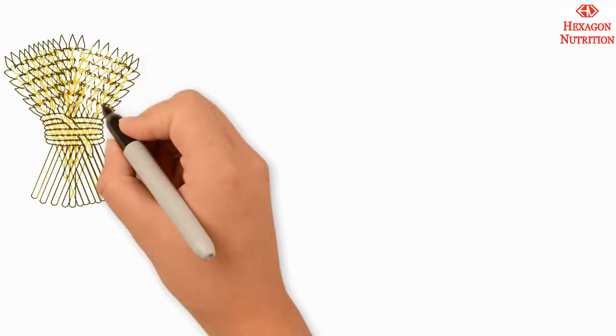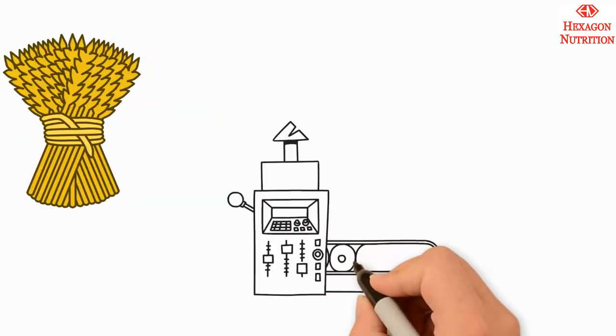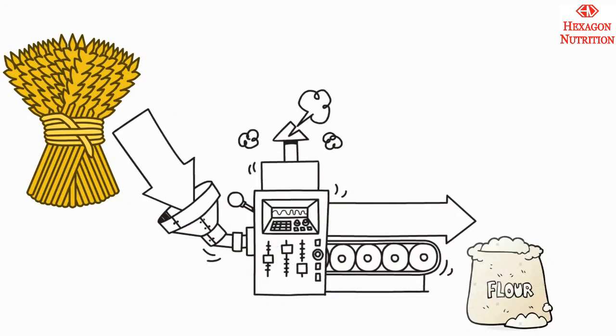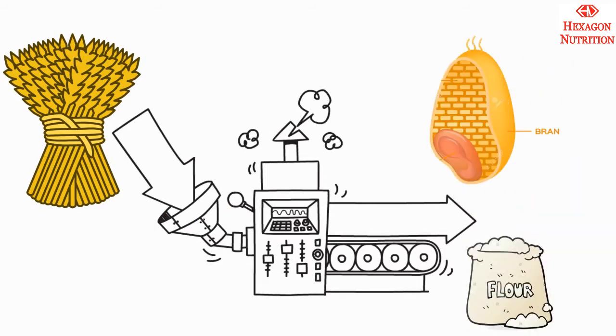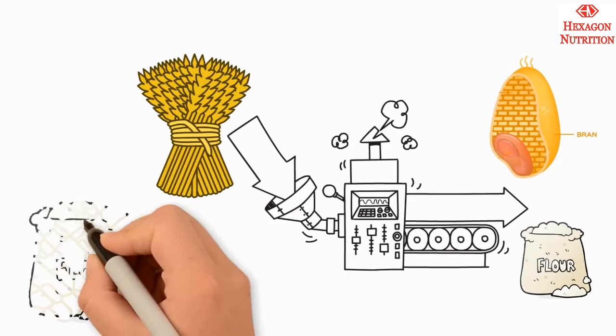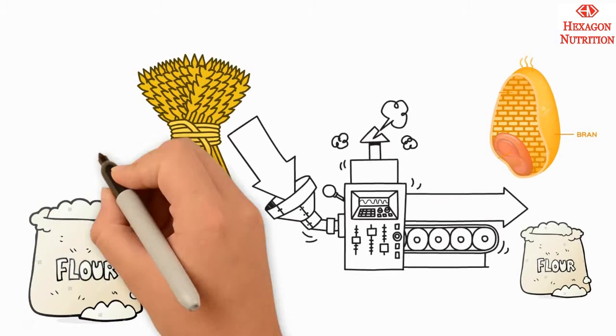Cereal grains undergo milling, a process that destroys essential nutrients that are otherwise concentrated near the bran layer of the grain. In order to restore the lost nutrients, flour could be fortified with several micronutrients.